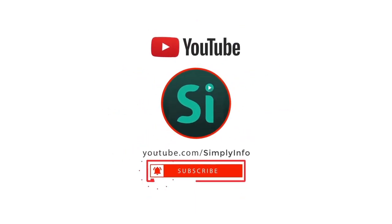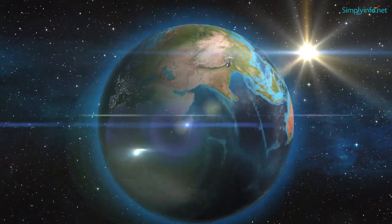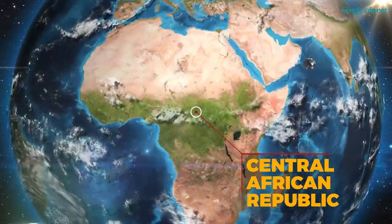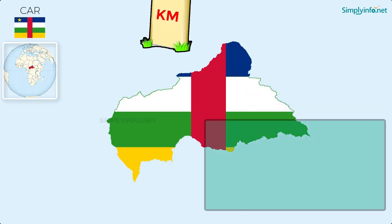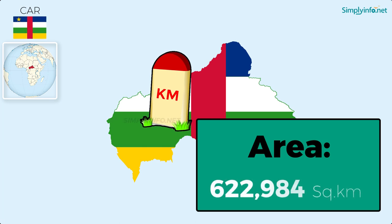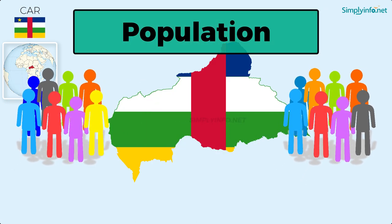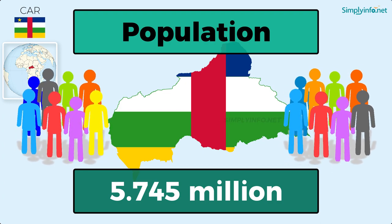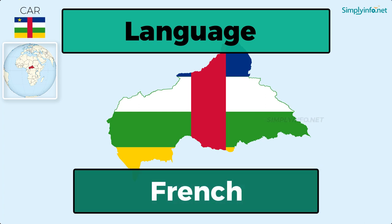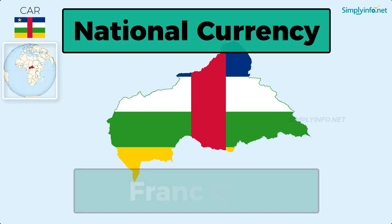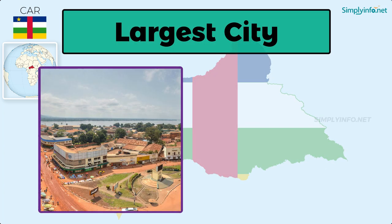Please subscribe for more videos and click the bell icon for updates. Central African Republic: capital Bangui, area 622,984 square kilometers, population as of 2018 is 5.745 million, language French, national currency Franc CFA, largest city Bangui.